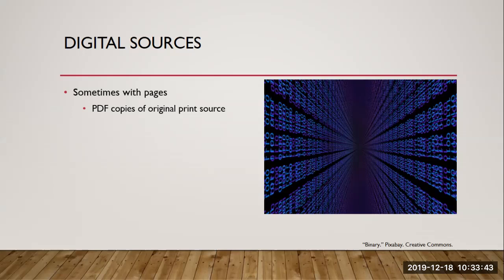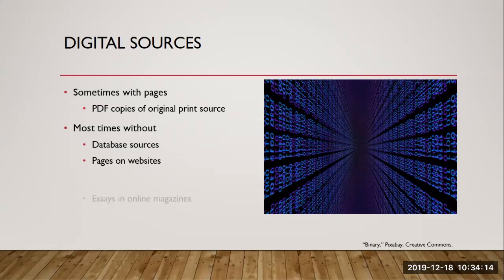Sometimes a publication will offer a PDF copy of its print publication. A direct PDF copy of an original will feature the same set pagination as the original, so pages should be referenced for this kind of digital source. But more often than not, most digital sources have no set pagination. These may include sources such as database sources, pages on websites, essays in online magazines, and online encyclopedias.